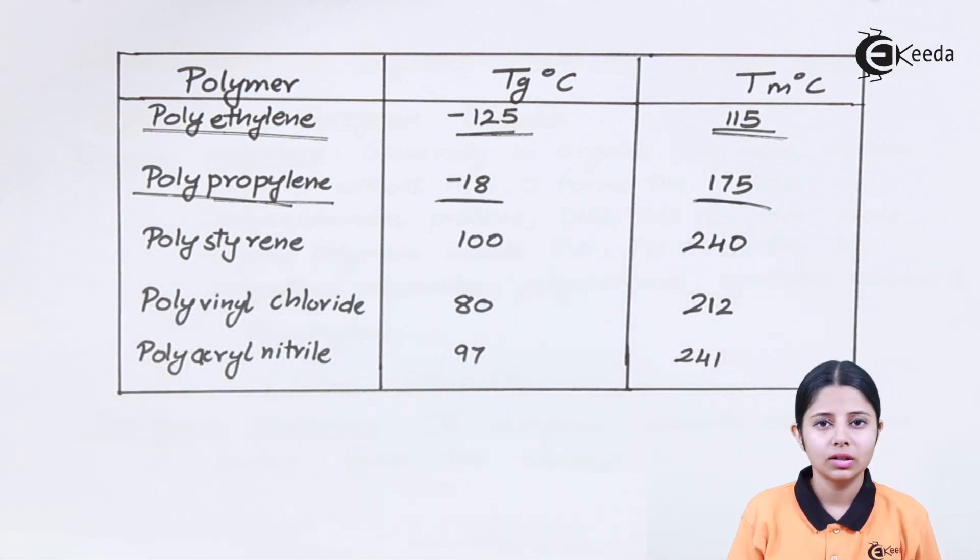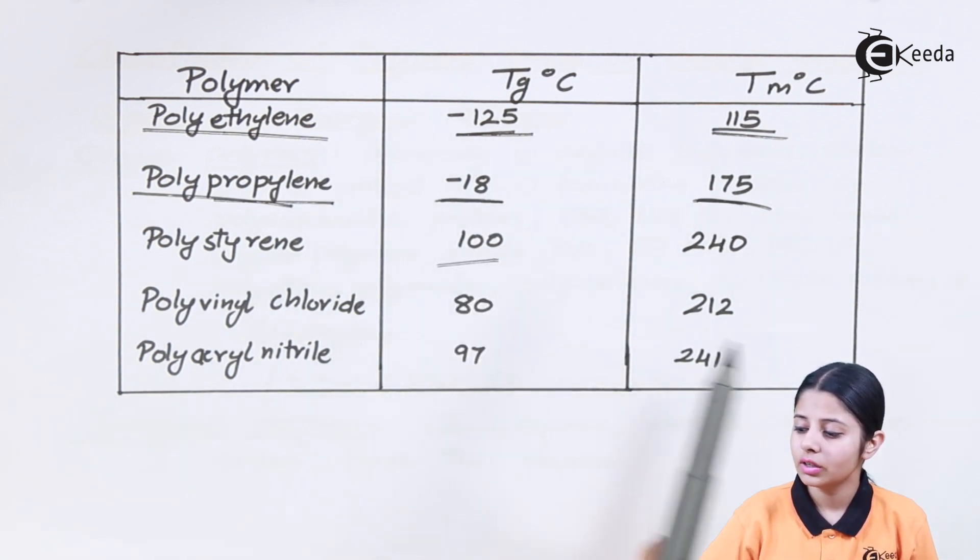Polystyrene. Polystyrene is nothing but the styrene molecule. Styrene is a benzene ring and on that benzene ring I have a C double bond C. For Tg we have 100 degrees Celsius. For Tm we have 240 degrees Celsius.